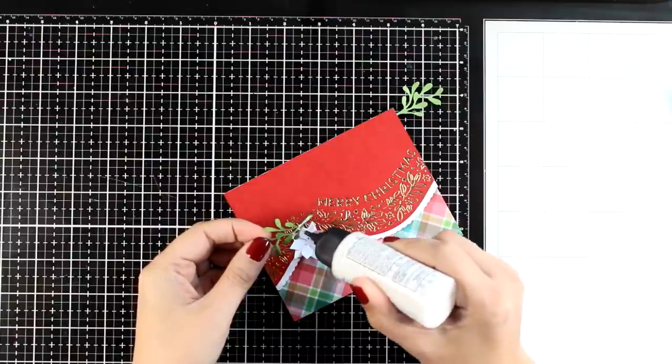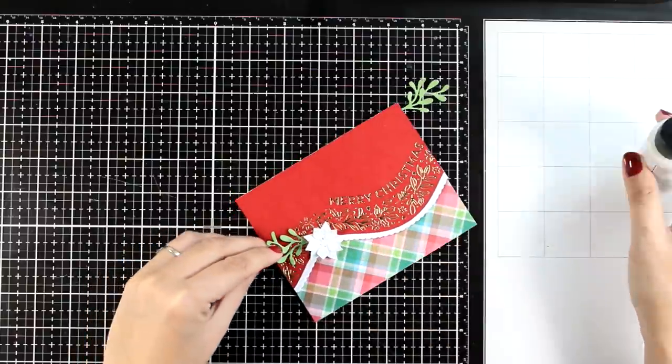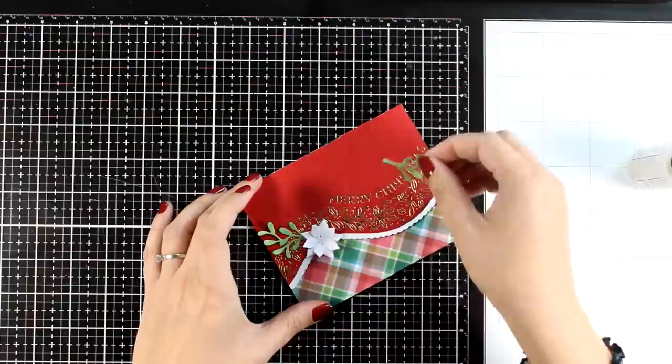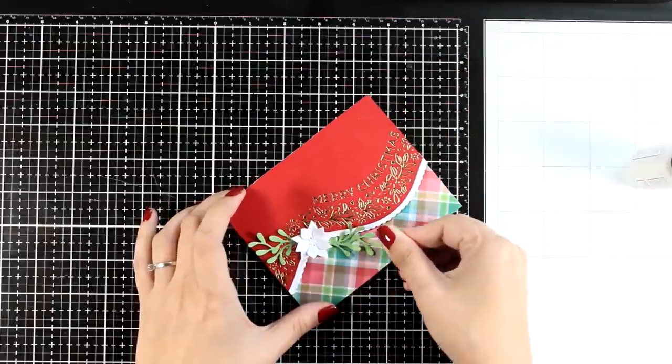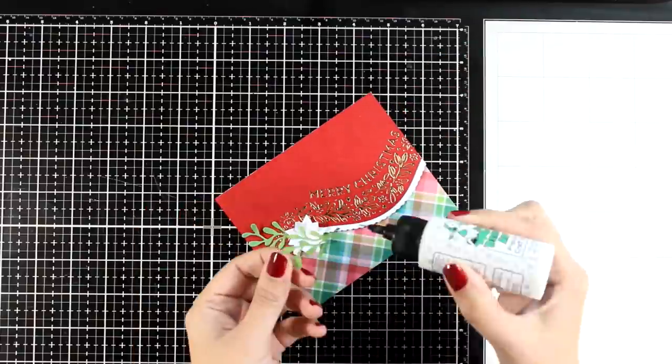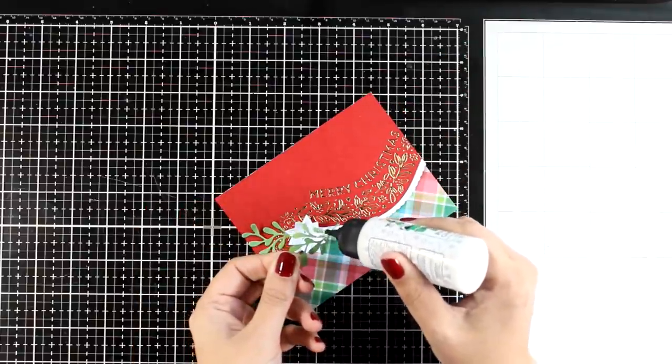I cut out two poinsettias out of white cardstock, offset one on top of the other to make it look fuller, and I'm burying the flower by adding some of those mistletoe branches.